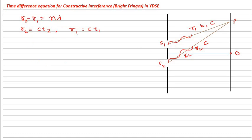Here the light waves are not getting accelerated, moving with constant speed, so you can apply this equation. C times T2 minus C times T1, that is equal to N lambda. T2 minus T1 is equal to N lambda by C.